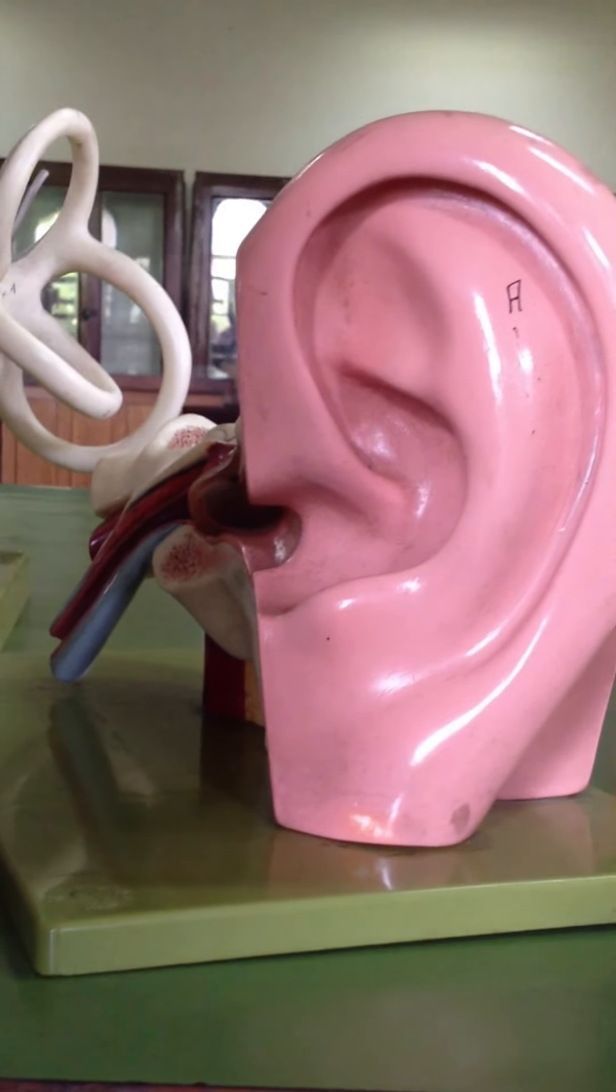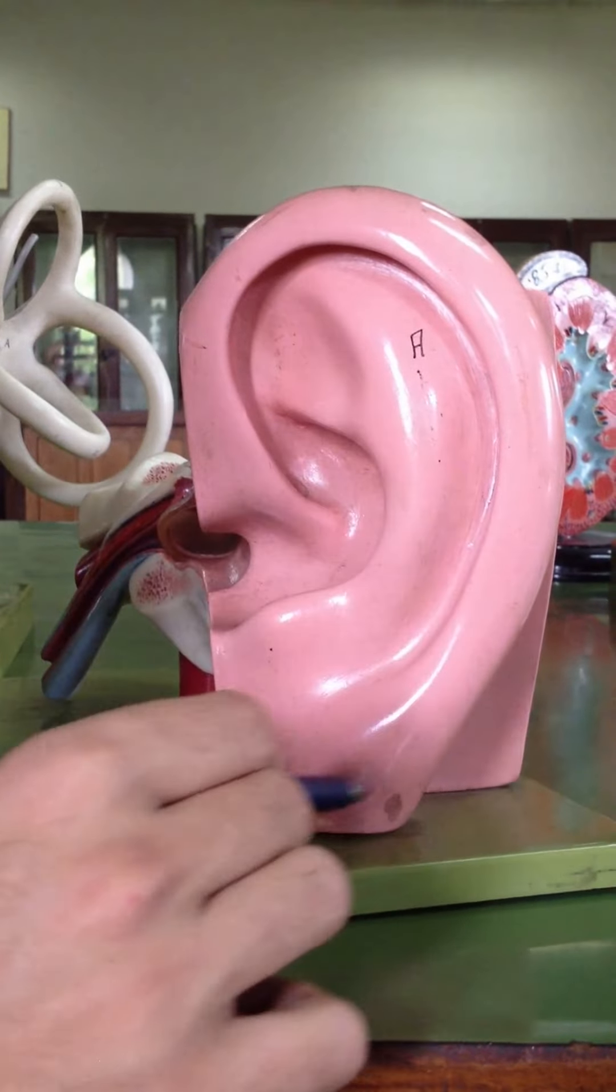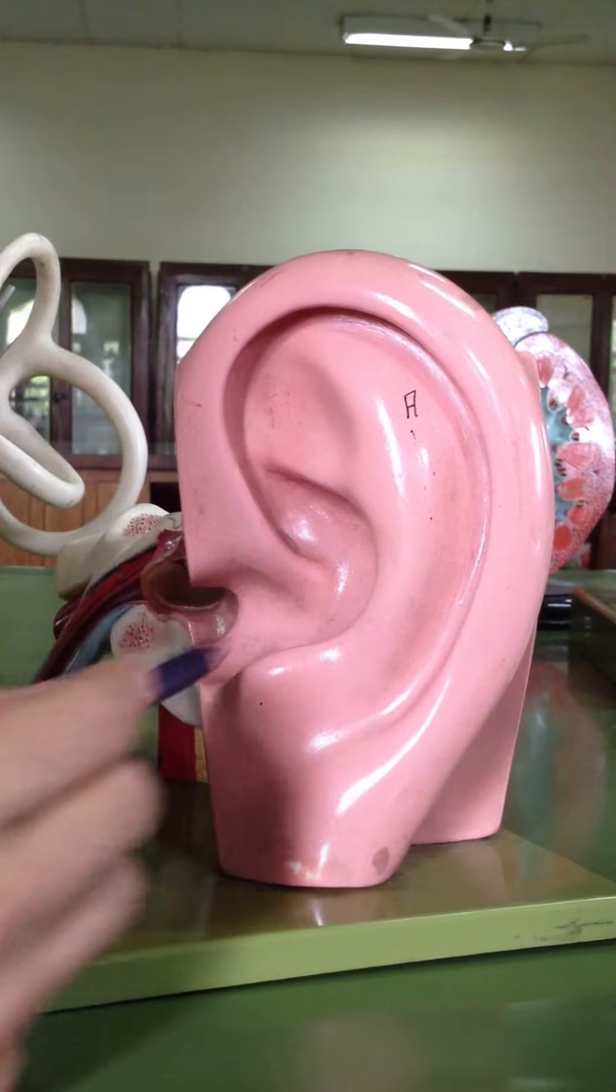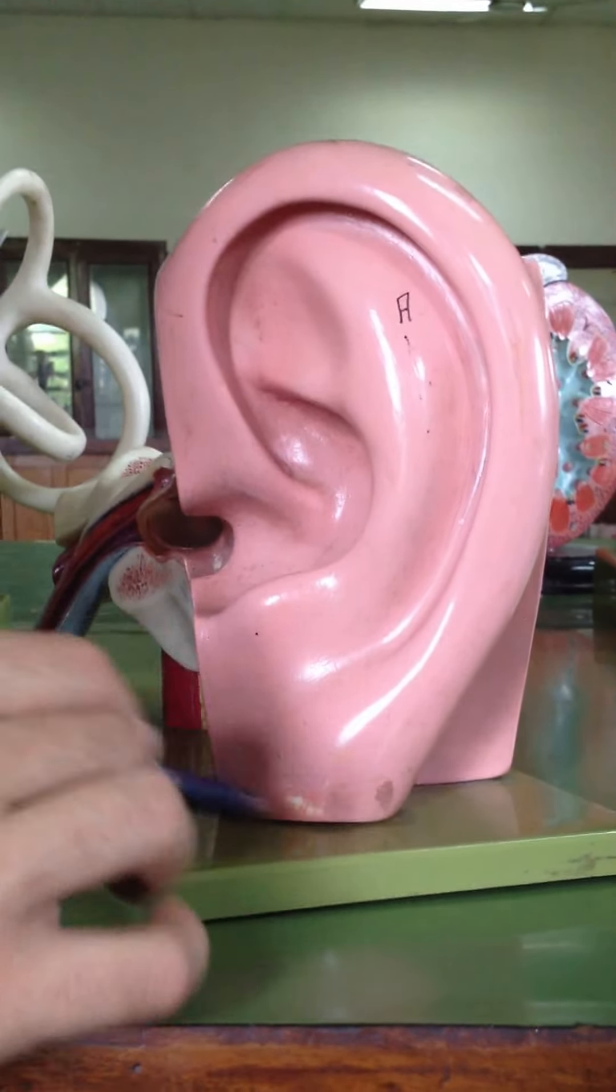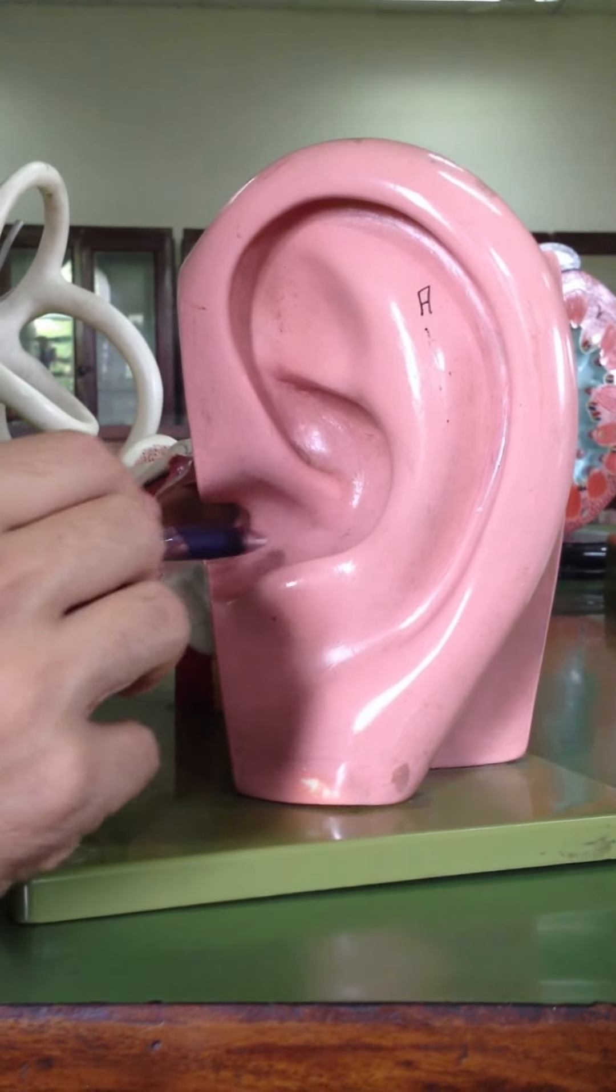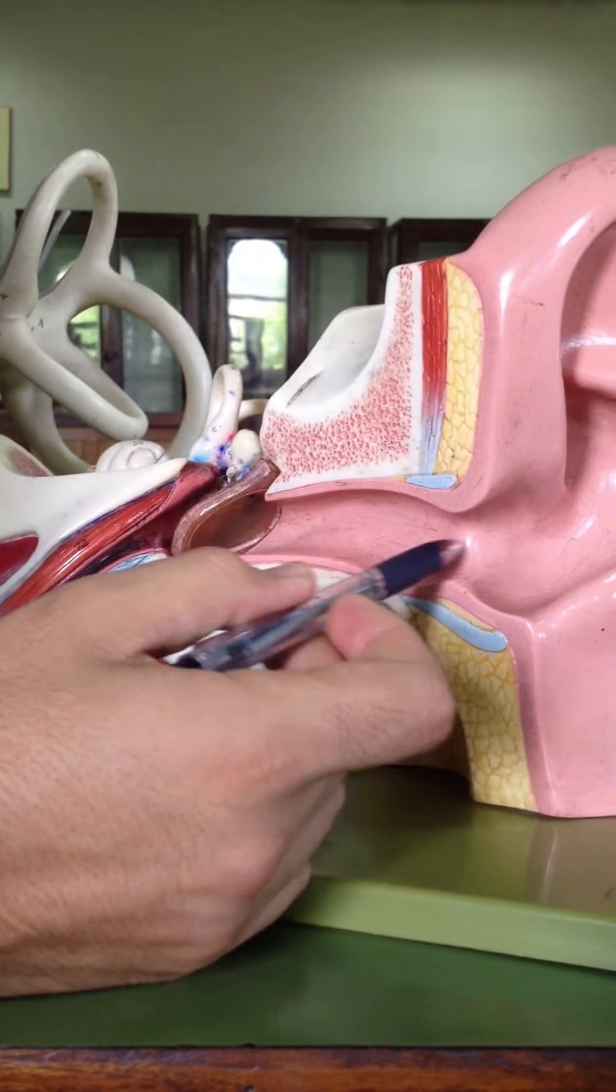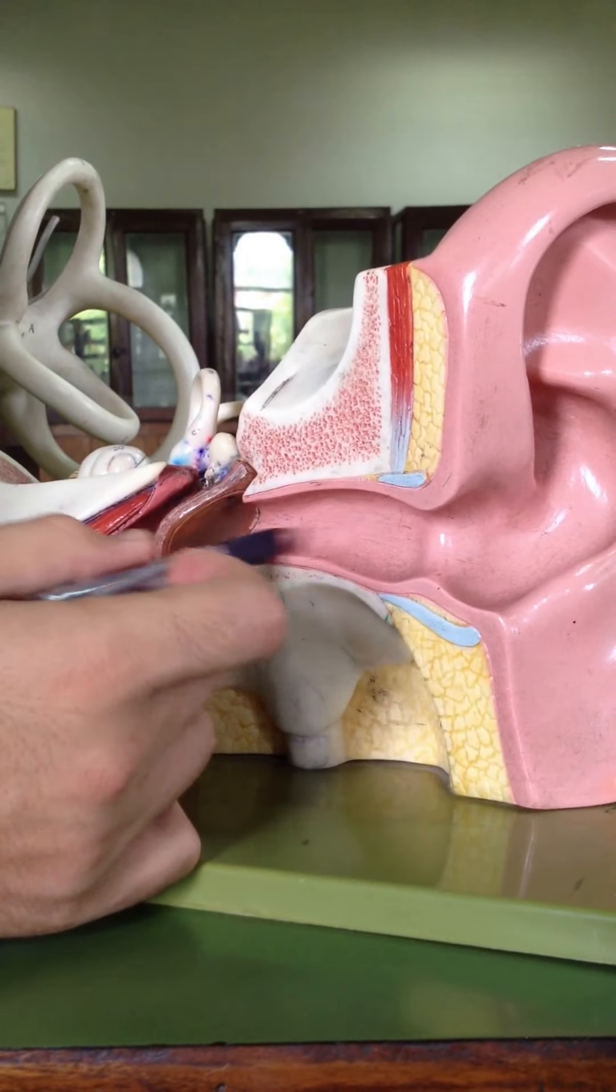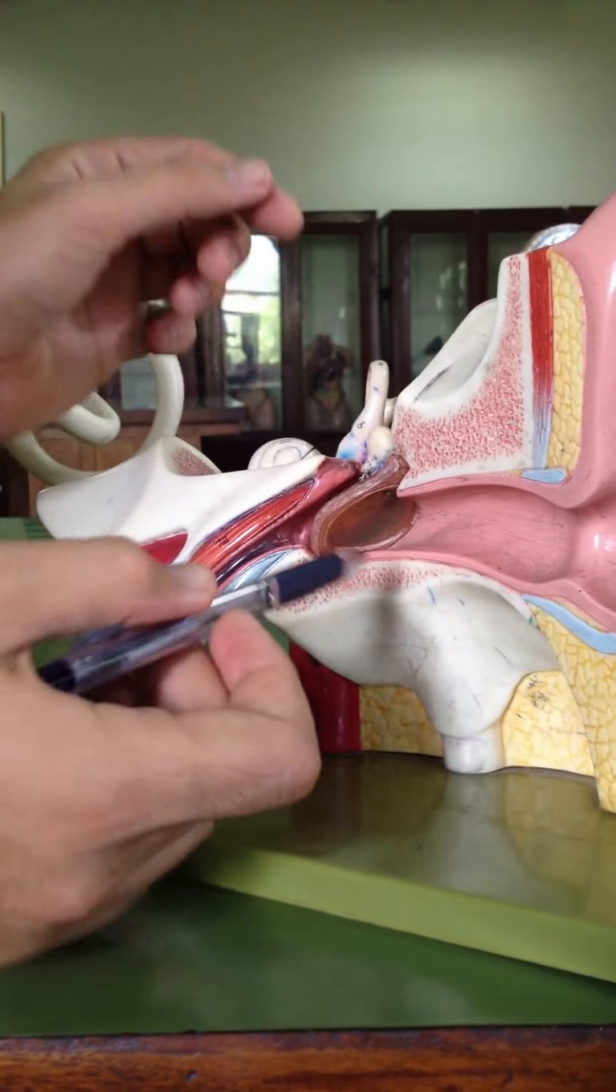Let's start. External auricle of the ear: helix, antihelix, tragus, antitragus, lobule, triangular fossa, conch of the auricle. Now external ear. Cartilaginous one-third of external ear, external auditory meatus. Bony external auditory meatus. Eardrum.